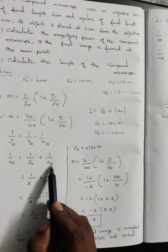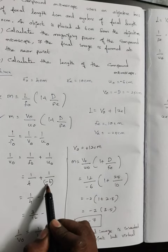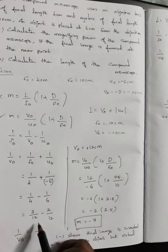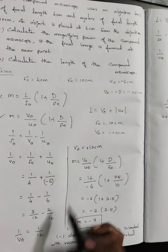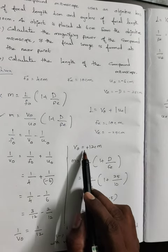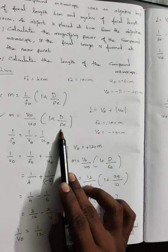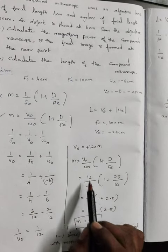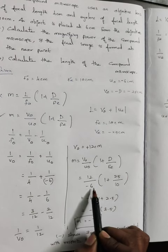After calculation, V0 is 12 cm. Substituting this V0 in the main formula with U0 as negative, and calculating the magnification.